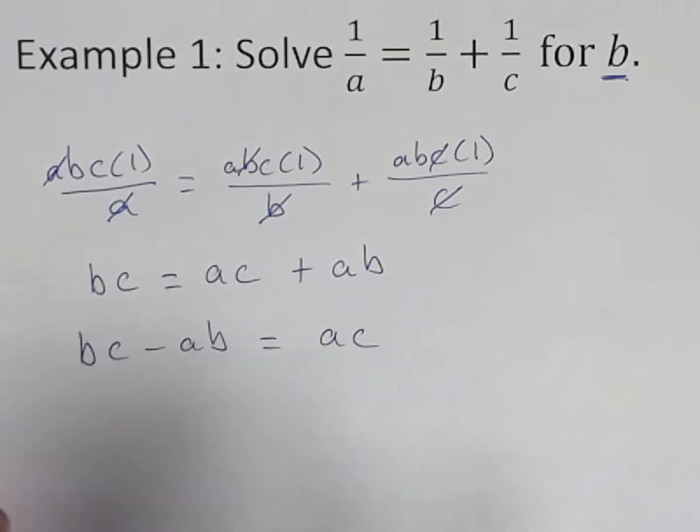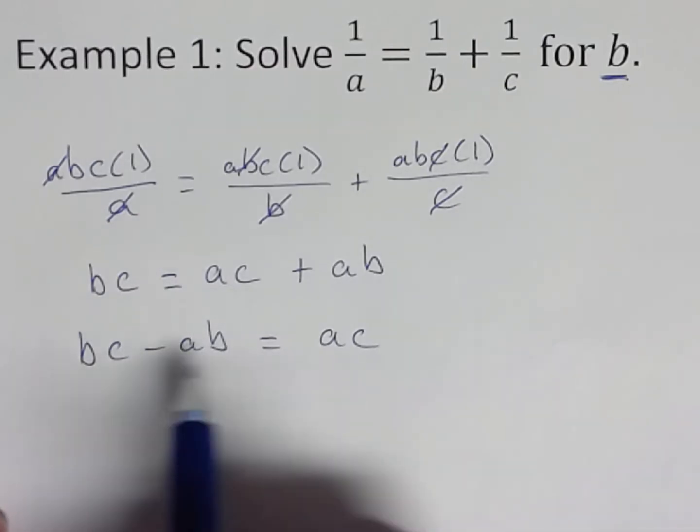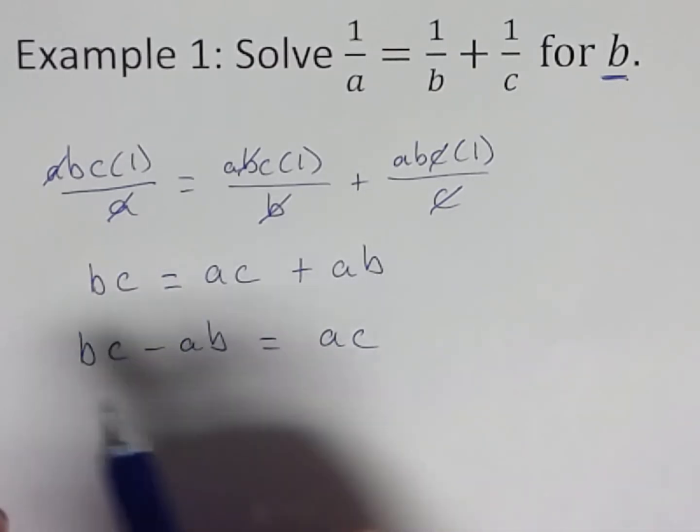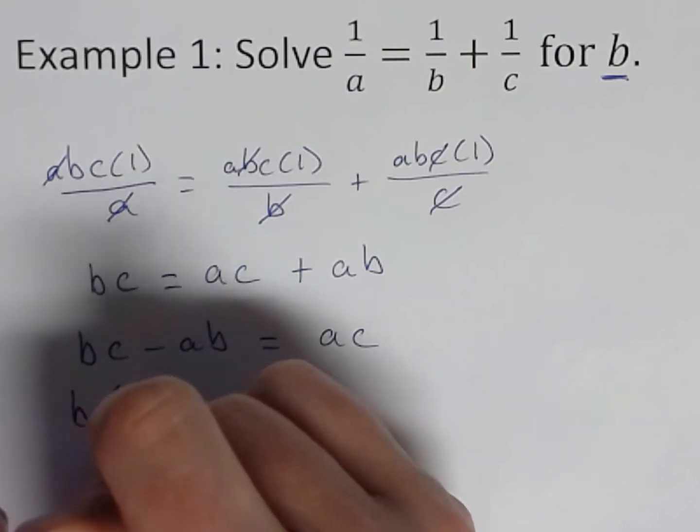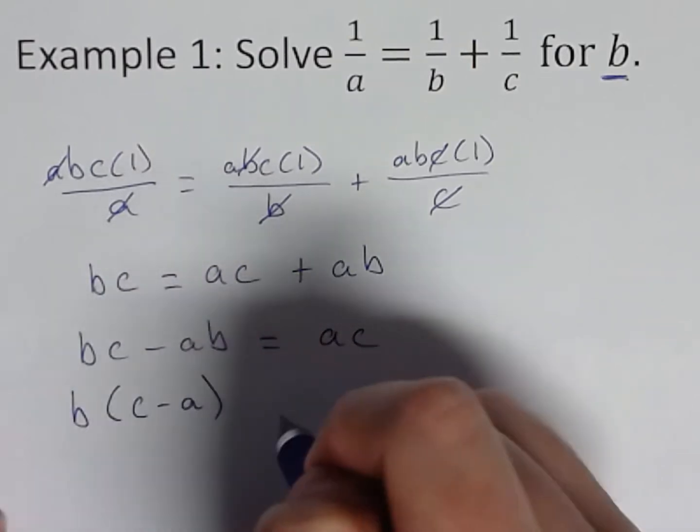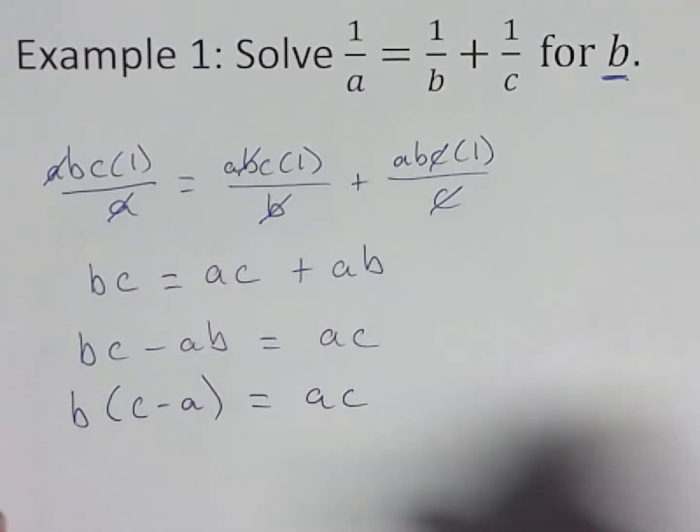Now I still have two Bs, but here's the key step. Why do we put them on the same side? Oh, we can factor. That's how we'll make two Bs become one. So factor B out. So B times C minus A equals A, C.